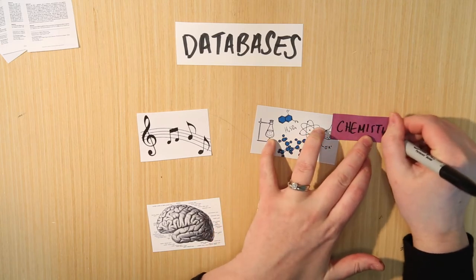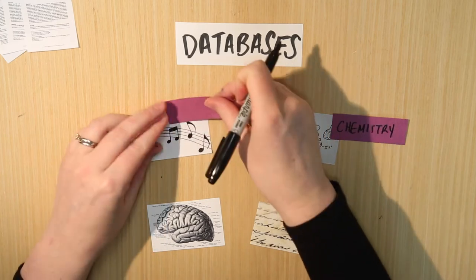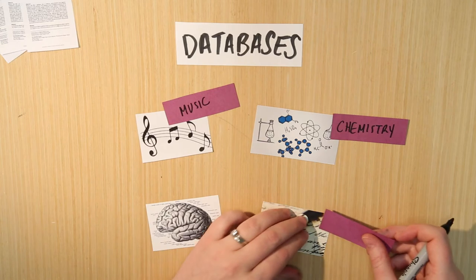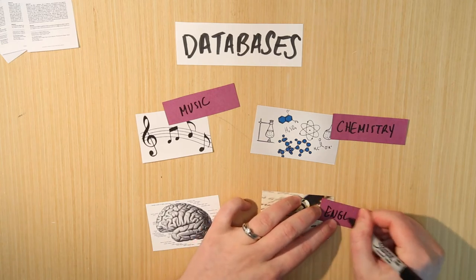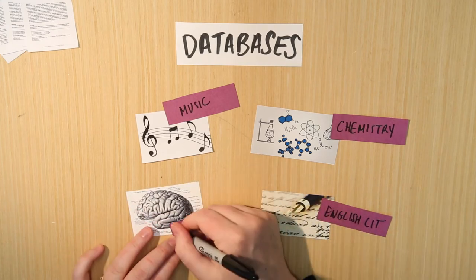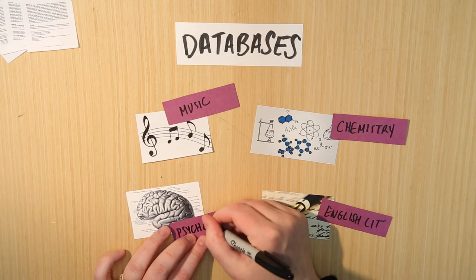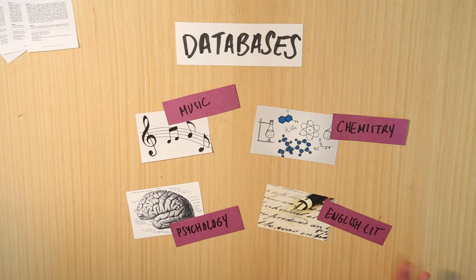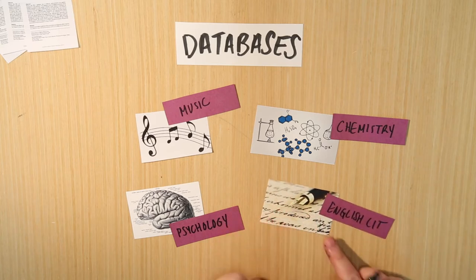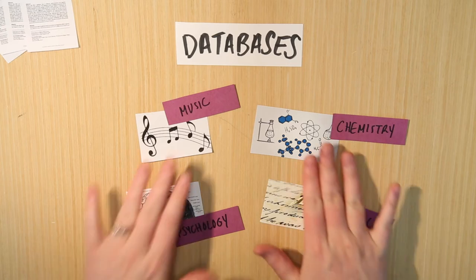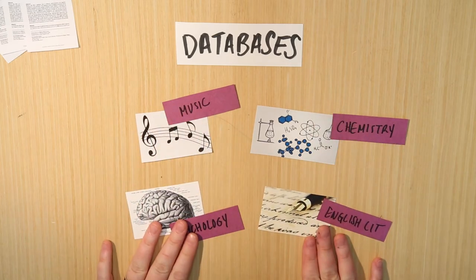For example, there's going to be a different database for chemistry, then there is for music, then there is for English Lit, then there is for psychology. So when you go into the library, what you're going to find is lots and lots of different databases that you could potentially try, and they all have different things in them. They have all had different researchers and different academic writers contributing to them through the journals, and then the articles from the journals get put into the databases in a categorized way.